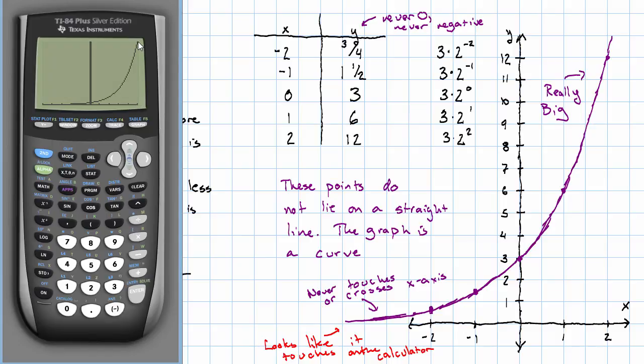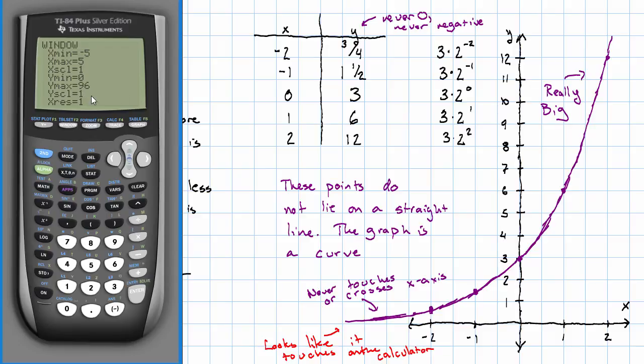Off to the right, my y's are getting really, really big. How big? Well, it looks like the biggest y on my screen is 96. If I decided to go from negative 10 to 10 instead. Well, now it looks like it's just down in the x axis for most of the length of the graph. Oh, the biggest y on my graph is 3072. That's pretty big. As I go off to the right, y gets really, really big.